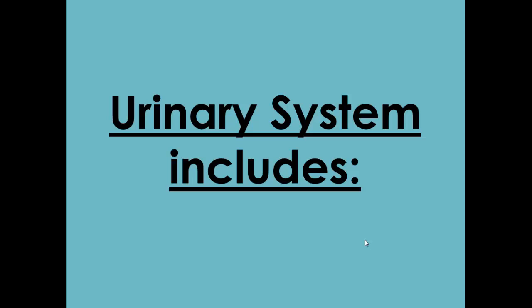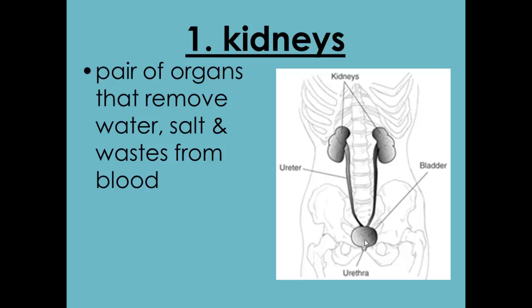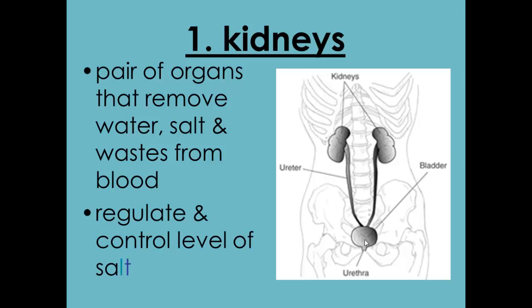Now for the urinary system. The urinary system is the system that gets rid of waste. One part of it is the kidneys. The kidneys are pairs of organs that remove water, salt, and waste from blood. They also regulate and control the level of salt and water in your blood. They are filters — that's a good way to compare kidneys. They're a good filter of waste and salt.